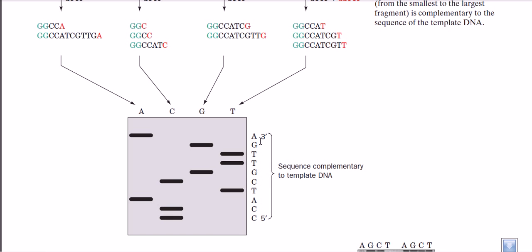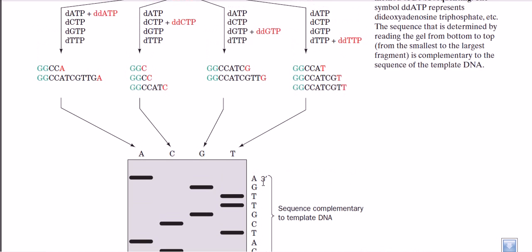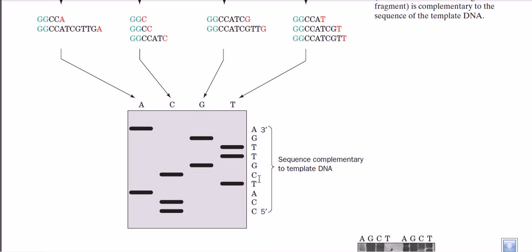This way we know the sequence of the complementary strand. From the complementary strand sequence, we can determine the actual template strand sequence by applying base-pairing rules: wherever we have C in the complementary strand, we have G in the template, and wherever we have A in the complementary strand, we have T in the template. So we can reconstruct the full template strand sequence.